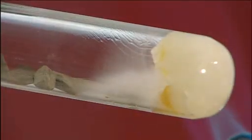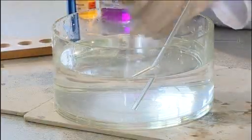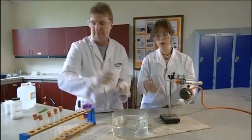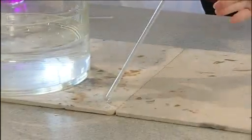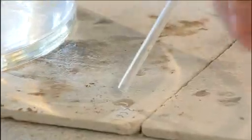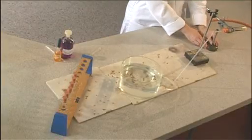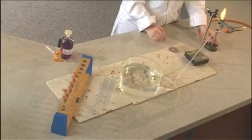Continue until six test tubes of gas have been collected. When you come to the end and you need to remove it from the water and stop heating it's really important that you remove from the water first and carry on heating for a moment. When you're happy that there's no water in the tube you can stop heating but I wouldn't turn off the Bunsen burner until you're convinced that everything has stopped.